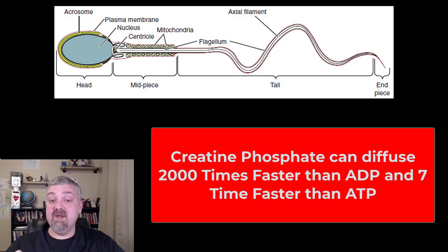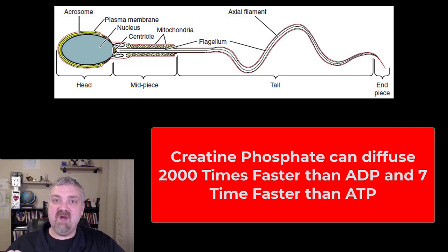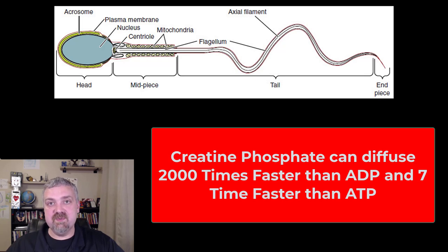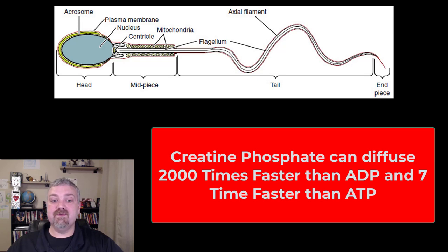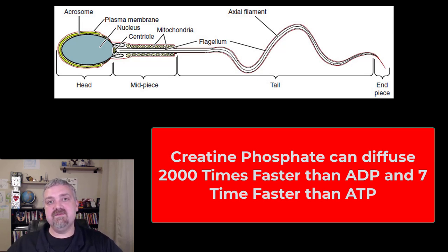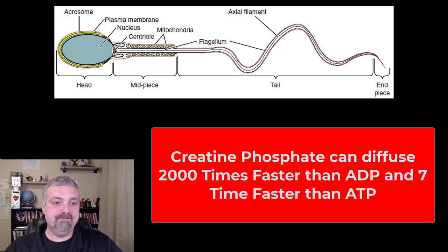We'll cover this in another video, but if you're wondering where sperm get their fuel, it's primarily fructose. Your seminal vesicles, which produce about 60% of semen, are very rich in fructose, so sperm use fructose for fuel. So that covers sperm production and the structure and function of a spermatozoa. I hope this helps. Have a wonderful day. Be blessed.